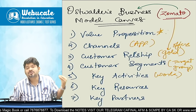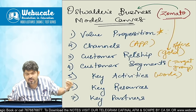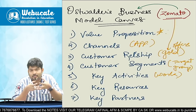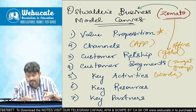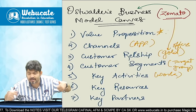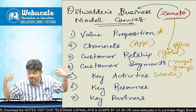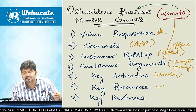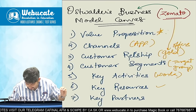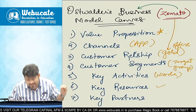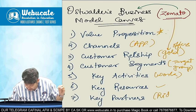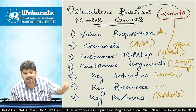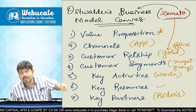Key resources. Toh Zomato ka jo packaging ho gaya, jo unki bikes ho gayi, ya unka jo t-shirt hai — all of that is a part of their resources. Key partners basically are their riders — jo itne saare unke riders hain, woh sab unke key partners hain.